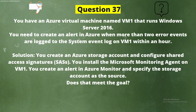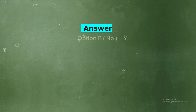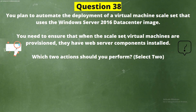Question 37: You have an Azure virtual machine named VM1 that runs Windows Server 2016. You need to create an alert in Azure when more than two error events are logged to the system event log on VM1 within an hour. Solution: You create an Azure storage account and configure shared access signatures. You install the Microsoft Monitoring Agent on VM1. You create an alert in Azure Monitor and specify the storage account as the source. Does this meet the goal? Option A: Yes. Option B: No. The correct answer is Option B: No. Explanation: Instead, you should create an Azure Log Analytics workspace and configure the data settings, install the Microsoft Monitoring Agent on VM1, and create an alert in Azure Monitor specifying the Log Analytics workspace as the source.